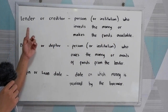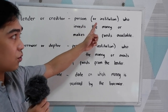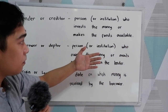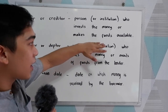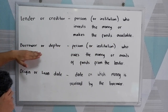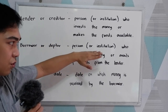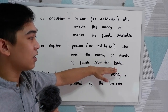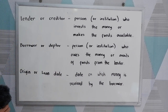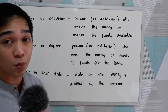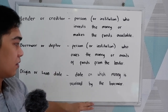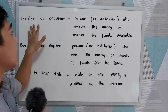Let's start with the lender or creditor. A lender is a person or institution who invests the money or makes the funds available — they invest so that funds will be available. We also have the borrower or debtor: a person or institution who owes the money or avails of funds from the lender. The origin or loan date is the date on which money is received by the borrower — the starting date wherein the debtor receives the borrowed money from the lender or creditor.